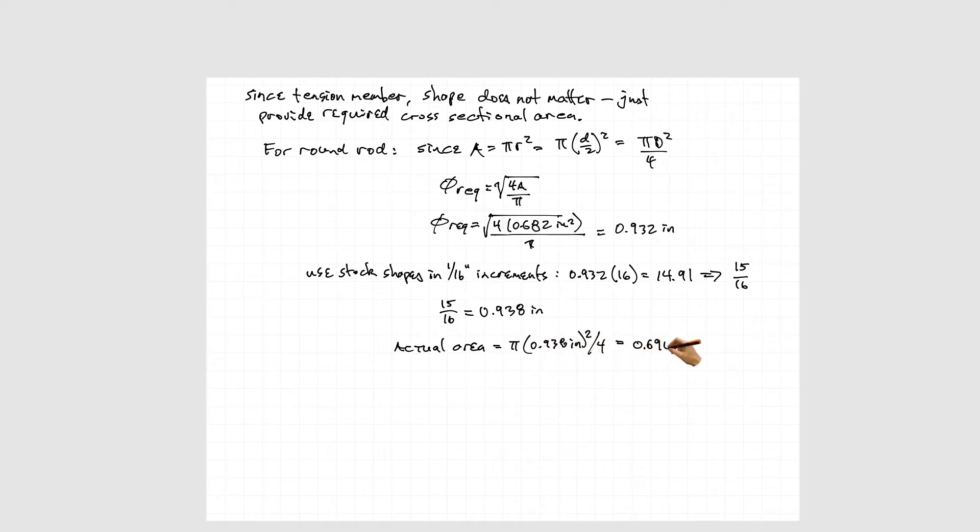We normally use things in stock sizes, which are 16th or 32nd of inch in segments. If we use one 16th inch segment and we want to find out how many whole number of 16ths that would be, multiply 0.932 inches by 16, comes out to 14.91. We don't have 14.91, so we have to go to 15/16ths, which is a diameter of 0.938 inches, slightly larger than our actual required diameter.